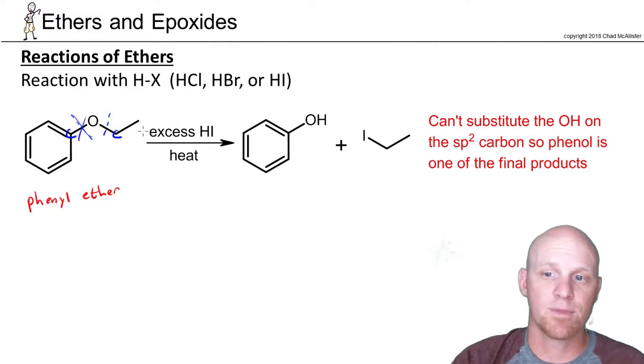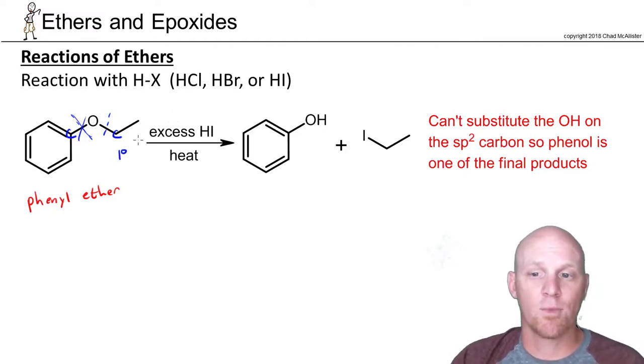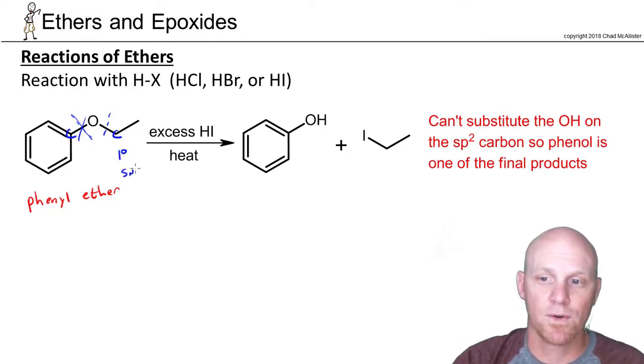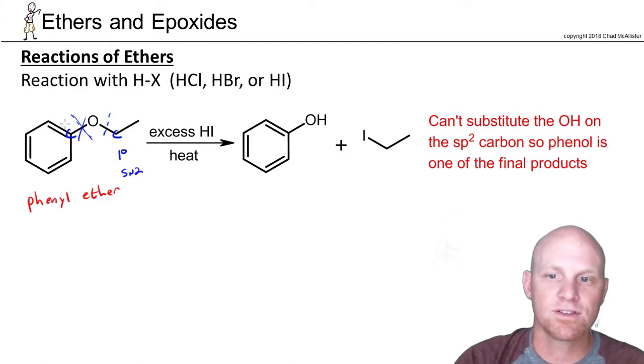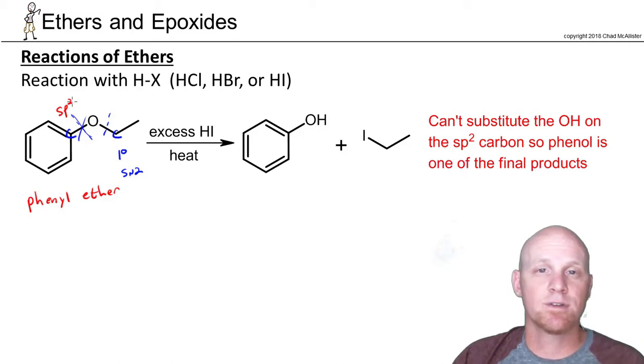That bond is not capable of being broken. This one is primary. And on that side, it'll go by an SN2 reaction. But the other side, the key here is this is an SP2 carbon. And with an SP2 carbon, you might recall, you can't do SN1 or SN2. And that's why we're not going to be able to break this bond.